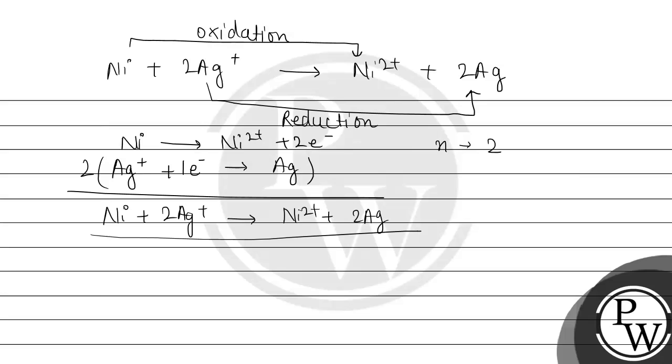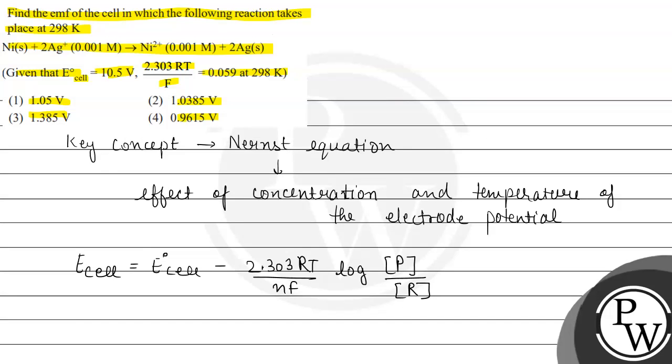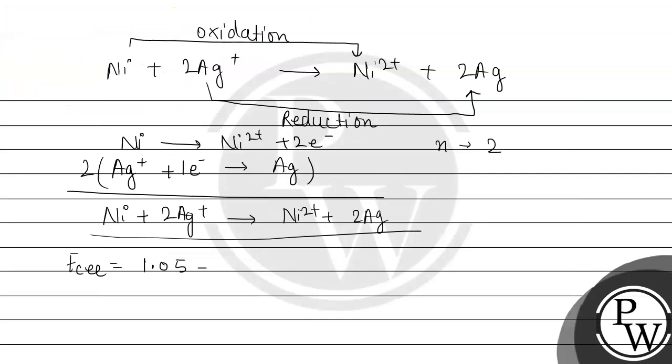So now we will put the values which we have. Let's find out Ecell. E°cell is given to us as 1.05 minus 2.303 RT by nF. According to the equation, 2.303 RT by F, the value that is given to us is 0.059, so we will use here 0.059 divided by n, and n value is 2, log of product concentration which is of Ni²⁺ for which we have concentration given that is 0.001 divided by the reactant which is Ag⁺ and concentration is 0.001 square.